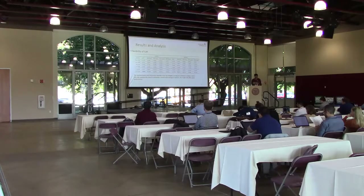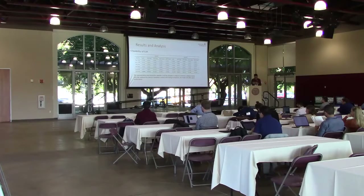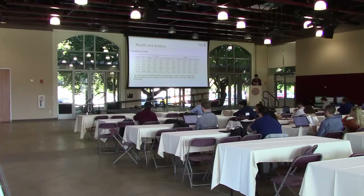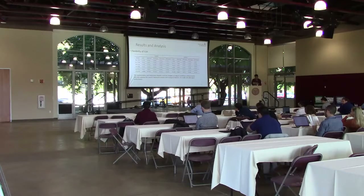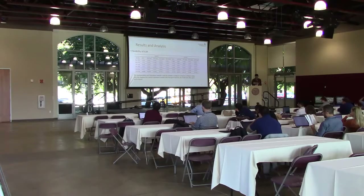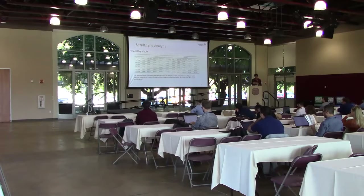Finally, we show the flexibility of our proposed ILM model. The representation and interaction modules in the model can be replaced, as long as they produce a feature vector. We build another variant called ILM-HIST, which replaces the 2D convolution interaction module with histogram features similar to the DRMM model. The model still achieves good performance and outperforms other baselines, demonstrating that the ILM model is flexible to incorporate other types of representation or interaction modules.